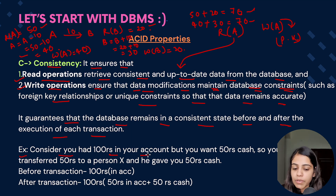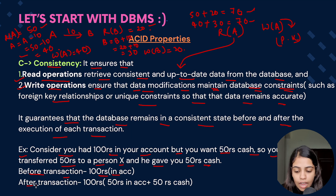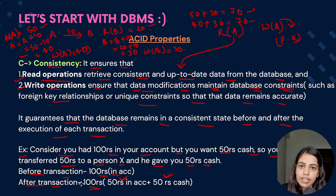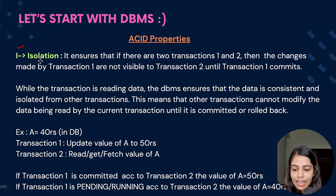Another example: you had 100 rupees in your account and wanted 50 rupees cash, so you transferred 50 rupees to person X and he gave you 50 rupees cash. Before the transaction you had 100 rupees in your account. After the transaction you have 50 rupees in your account plus 50 rupees cash from person X — so the data is consistent before as well as after the transaction.